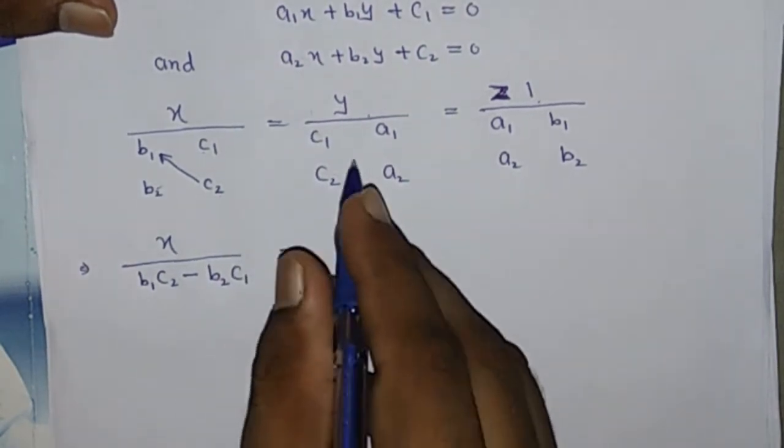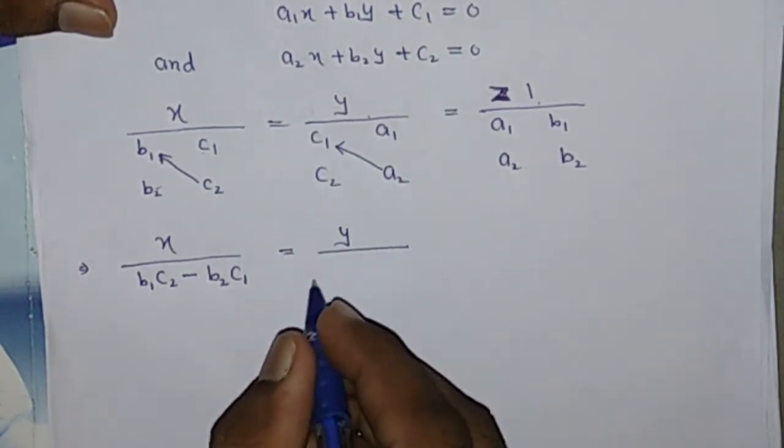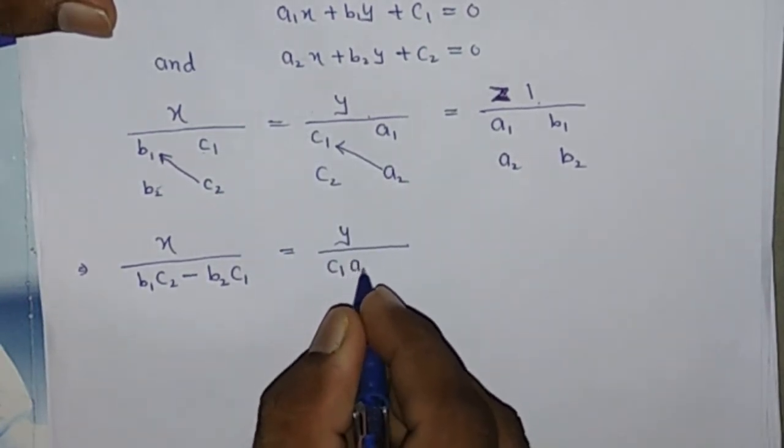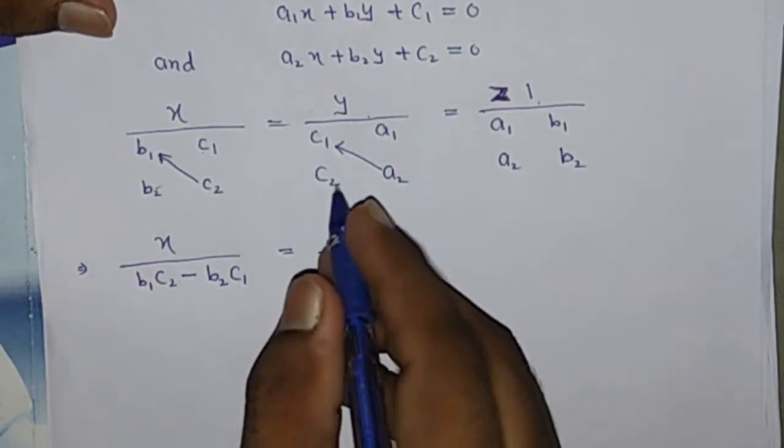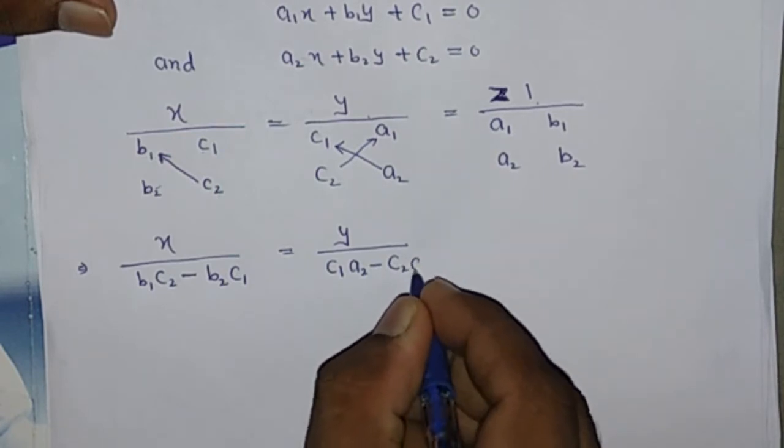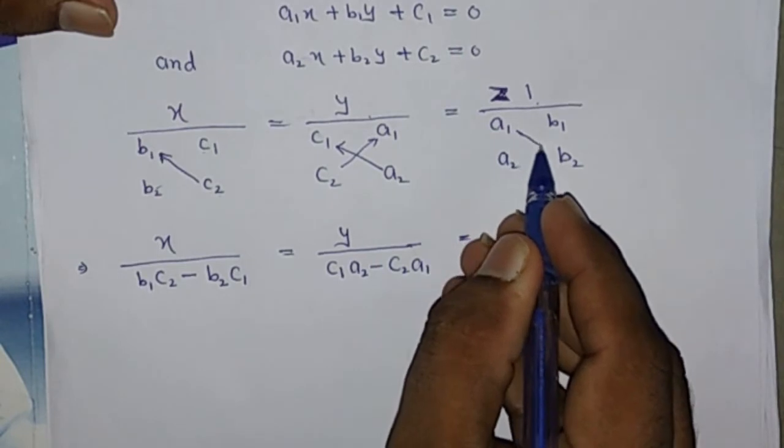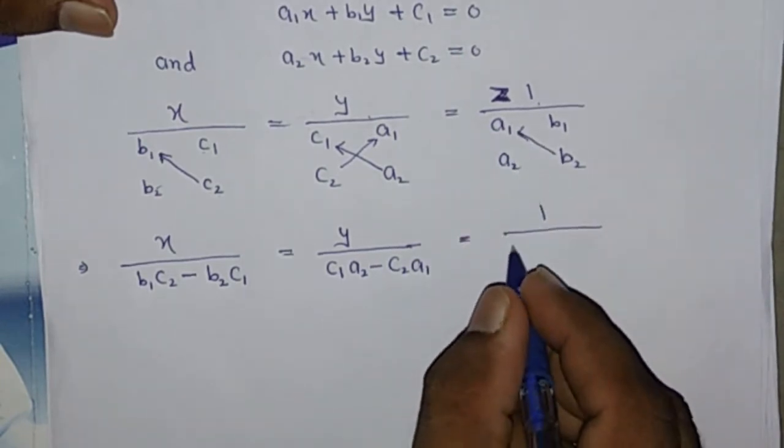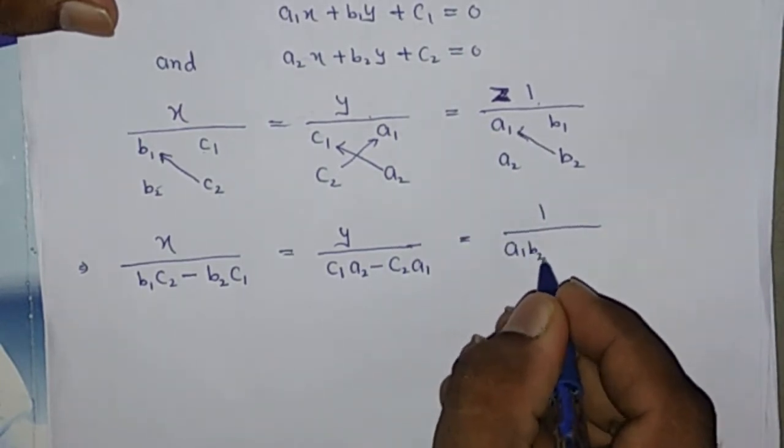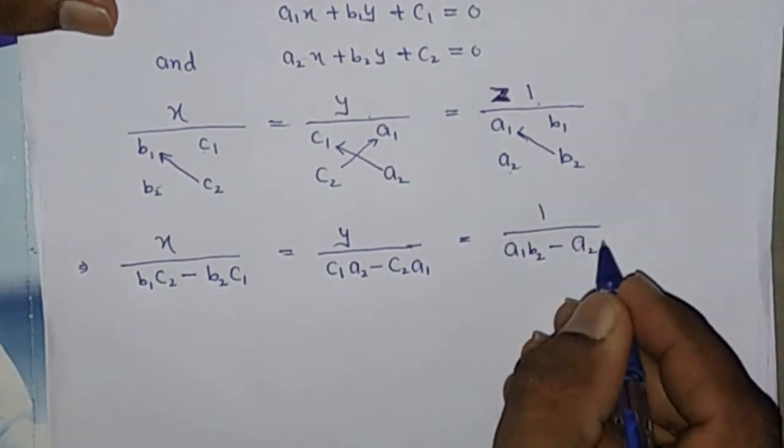In this step we multiply C1 to A2 and C2 to A1. In this step A2 B1.